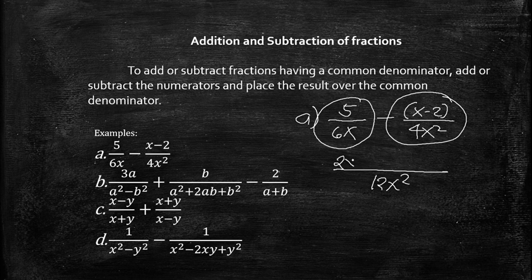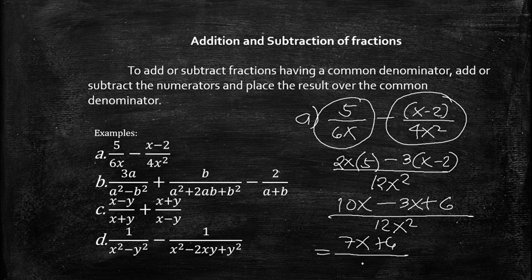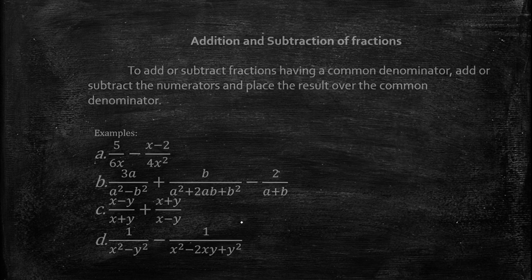So we have 2x times 5, minus: 12x squared divided by 4x squared equals 3, so 3 times (x minus 2). That gives us 10x minus 3x plus 6 over 12x squared. The result simplifies to 7x plus 6 over 12x squared. That is the answer when you add or subtract these fractions.